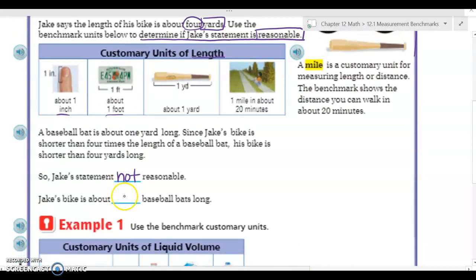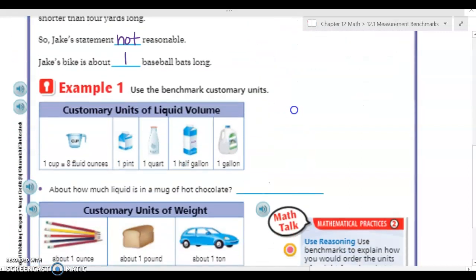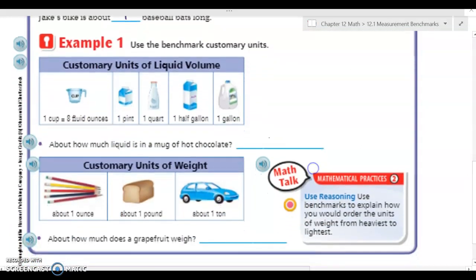Okay, our next examples are other types of units. Our first customary unit is liquid volume, so how much liquid something holds. I've got one cup is equal to eight fluid ounces, one pint, one quart, one half gallon, and one gallon, which is about what your milk comes in. So about how much liquid is in a mug of hot chocolate? If I'm thinking about a mug of hot chocolate, it's going to be about one cup.